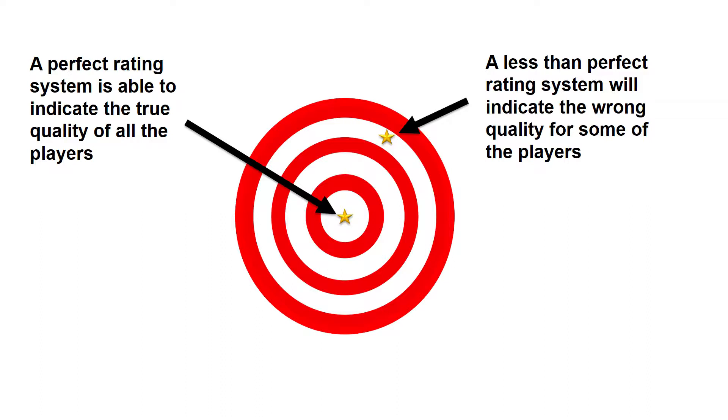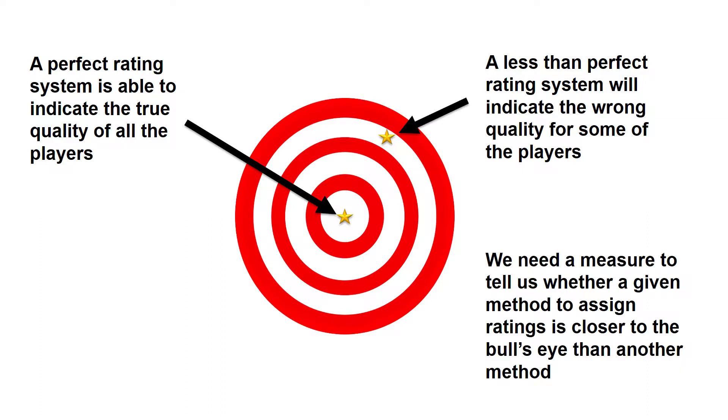These can be represented by points on the target with the distance from the bull's eye representing how much worse they are than the perfect rating. To evaluate rating systems we therefore would like some method to measure which of two different sets of ratings are more accurate.